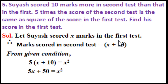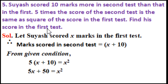This is the last question of Practice 2.6; star-marked questions are taken in separate lectures. Problem 5: Suyash scored 10 marks more in the second test than in the first. Five times the score of the second test is the same as the square of the score in the first test. Find his score in the first test. Let score in first test be x, so score in second test is x plus 10.